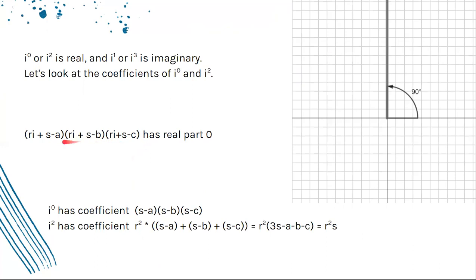This is because you need two Ri's and one real part. So you could have Ri Ri and S - C, or you could have Ri Ri and S - B, or you could have Ri Ri and S - A. And we know that S - A + S - B + S - C is just 3S - A - B - C. And since A + B + C is the perimeter, or 2S, this is really just 3S - 2S, which is just S.